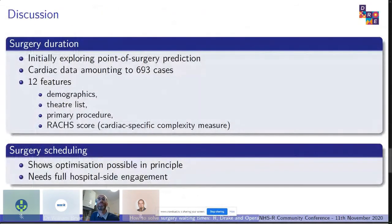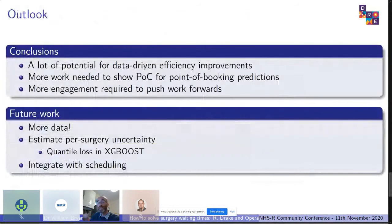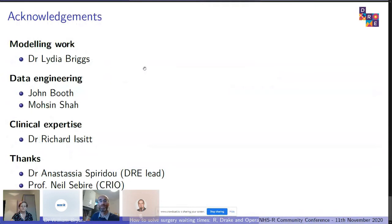For discussion: we've initially explored surgery duration prediction with only 693 cases, which will need to be expanded across the trust. We have 12 features so far and we're looking to expand across other datasets. The scheduling shows that optimisation is possible, but we need hospital engagement. There's a lot of potential here for data-driven efficiency - one of the big things needed is engagement from the trust, and we're currently working with the executives around this. We have a lot of interest now that our EPR is in place.